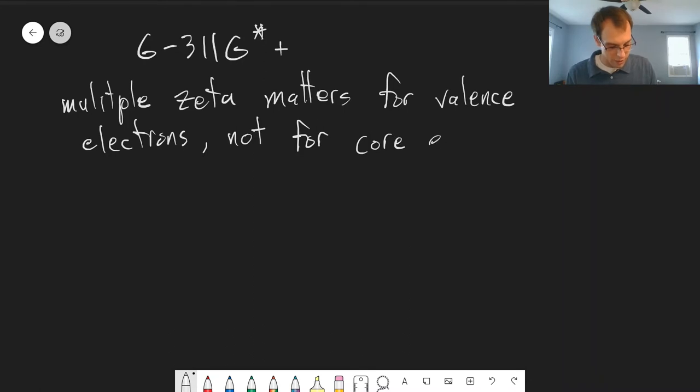And so we'd rather not bother with that, right? If we don't need to include this extra complexity for these core electrons, well, let's split it up. Let's do something different for the core electrons and something different for the valence electrons. So this is what's known as a split valence basis set.